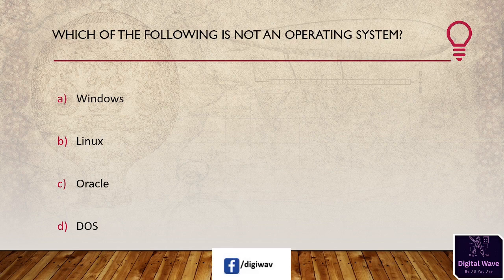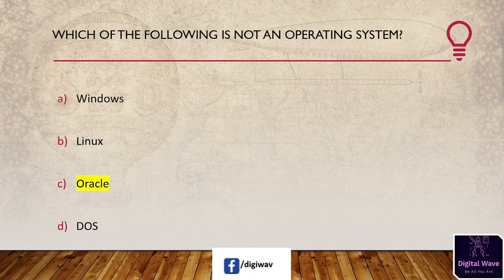First question: which of the following is not an operating system? Options: Windows, Linux, Oracle, DOS. The right answer is Oracle. Oracle is an RDBMS, means Relational Database Management System. It is known as Oracle Database, Oracle DB, or Oracle. The first database for enterprise grid computing is the Oracle database.